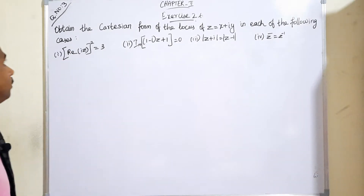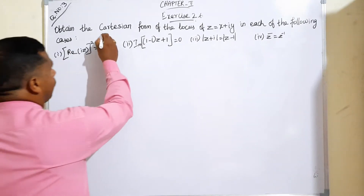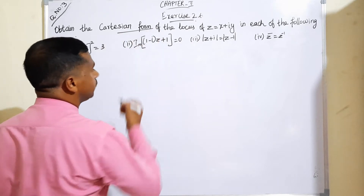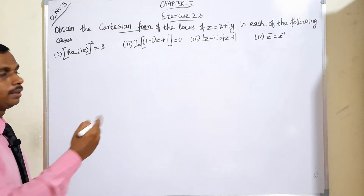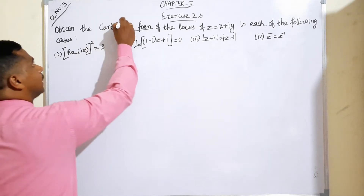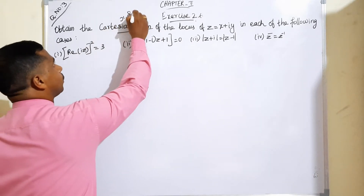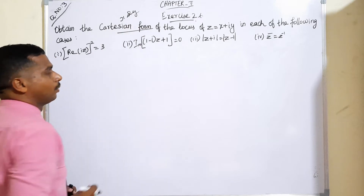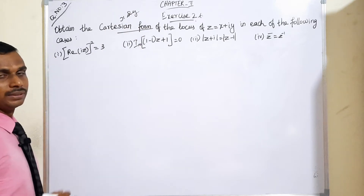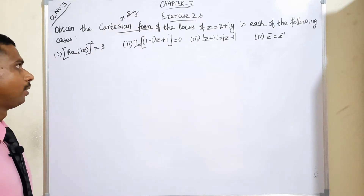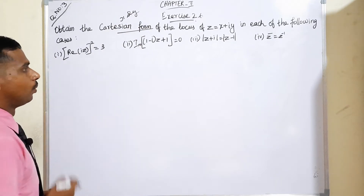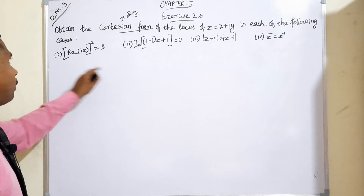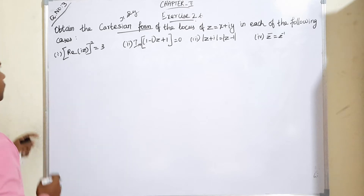What are they given? Obtain the Cartesian form. Already you know what is the meaning of Cartesian form? It represents x and y — that is one of the equation terms, not mixed with imaginary terms. They are given 4 subdivisions, so we will solve 1 by 1.